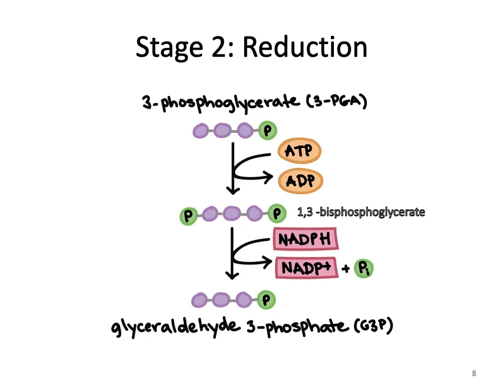To keep the Calvin cycle running, the process regenerates ADP and NADP+, thus providing the substrate needed for the light-dependent reaction.